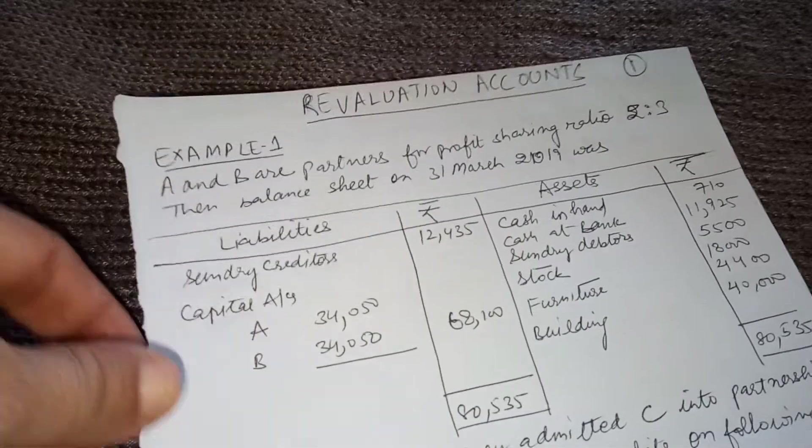Now for the capital accounts: the previous balances of the partners were 34,050 each, which we bring down. The new partner C brings 30,000 as capital, entered by cash — 30,000. Now we deal with the goodwill amount, but first let us calculate the sacrifice ratio of the partners.